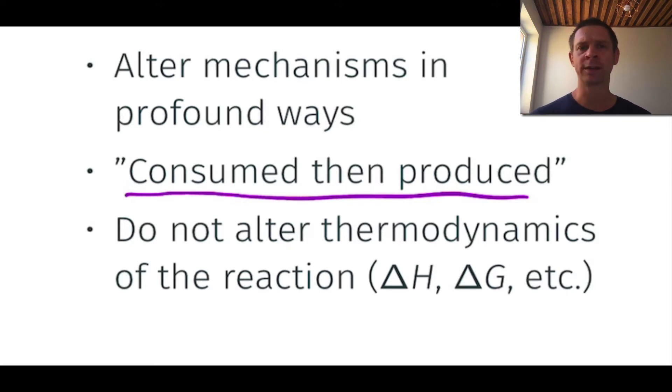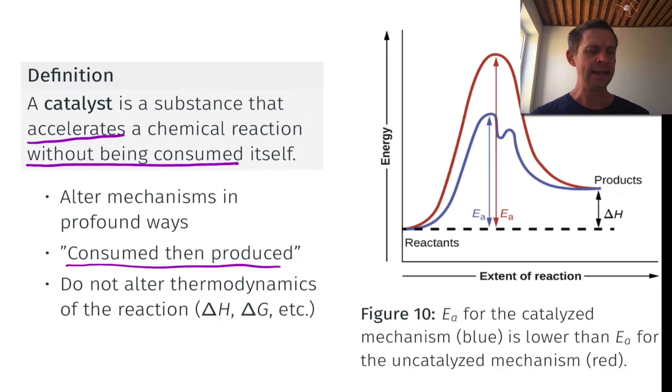And the basic way catalysts work in an energetic sense is captured in this diagram that you see on the right-hand side. The red pathway is for an uncatalyzed reaction that, for example, goes by a single elementary step. And we know that because the step has one transition state. There it is, right there. And no intermediates, so the mechanism involves a single step. But notice what happens when we introduce some catalyst. The mechanism might change, and now we have a two-step mechanism with two transition states. And so the mechanism has profoundly changed.